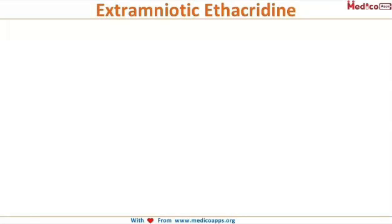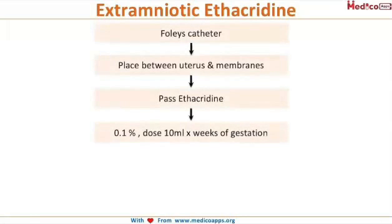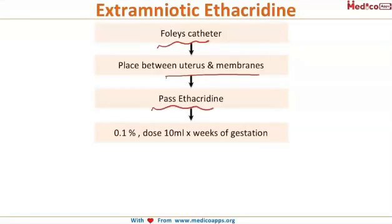Extra amniotic ethacredine. In this procedure, a Foley's catheter is introduced between the uterus and the membranes. You go through the internal os and this catheter is inserted between the uterine wall and the amniotic membranes.